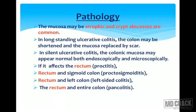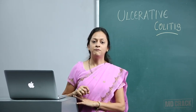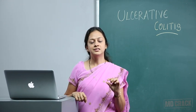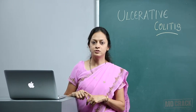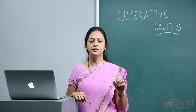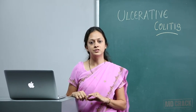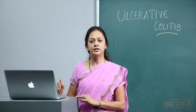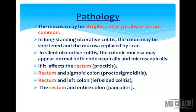In pathology, the mucosa may be atrophic and crypt abscesses are common. In Crohn's colitis, it is the full thickness of the intestinal wall that is involved, whereas in ulcerative colitis it is mucosal and submucosal disease — I will stress this point: it is the mucosa which is involved in ulcerative colitis. In long-standing ulcerative colitis, the colon may be shortened and the mucosa replaced by scar.